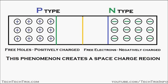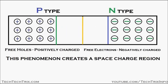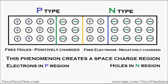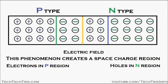This is the space charge region which is created at the junction. Electrons are available in the P region at this space charge region, and holes are available in the N region at this space charge region.